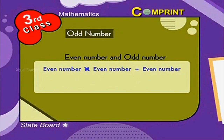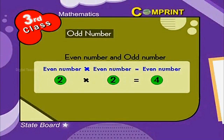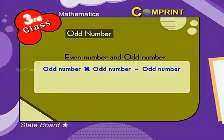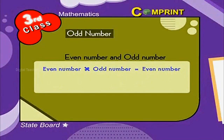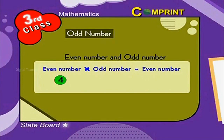Even Number into Even Number is equal to Even Number. For example, 2 into 2 is equal to 4. Odd Number into Odd Number is equal to Odd Number. For example, 3 into 3 is equal to 9. Even Number into Odd Number is equal to Even Number. For example, 4 into 3 is equal to 12.